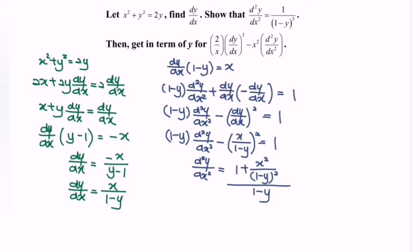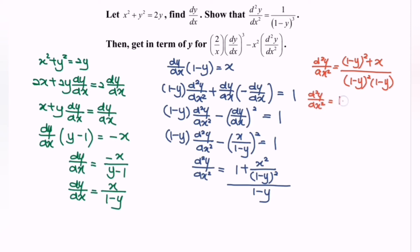Rewriting: the second derivative equals 1 minus y squared plus x over (1 minus y) squared, all multiplied by (1 minus y). Expanding the numerator: 1 minus 2y plus y squared plus x squared, all over (1 minus y) to the power of 3. We note that y squared plus x squared actually equals 2y from the original equation.